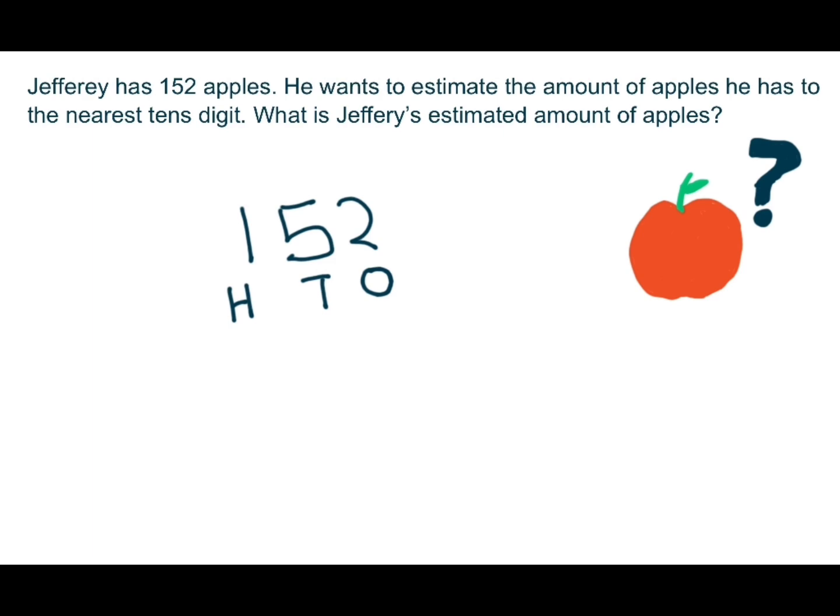What is Jeffrey's estimated amount of apples? We are looking at the nearest tens digit, so we are looking back at 2. Is 2 greater than 5? 2 is not greater than 5, it is less than 5. So therefore, you round down. The answer of this problem is 150.